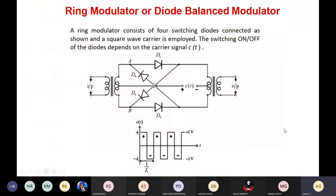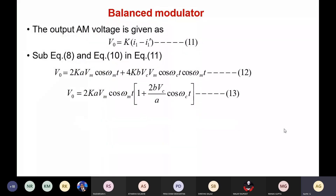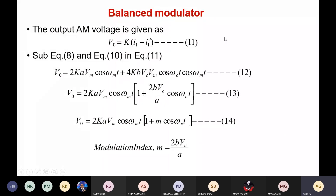We have seen what is double sideband suppressed carrier and the need to suppress the carrier. In order to improve power efficiency, we go for DSB-SC. There are two methods of generation — one is the balanced modulator method, and we dealt in the last class with how to generate it using a product modulator, combining the message and carrier signal to produce upper and lower sidebands.